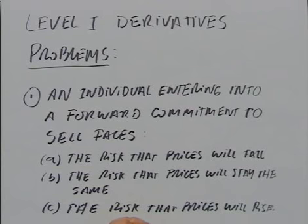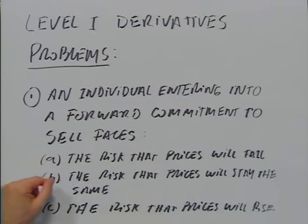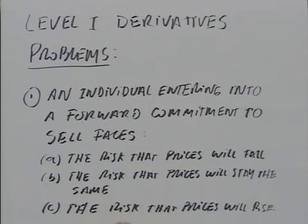You're asked: an individual entering into a forward commitment to sell faces what kind of risk? The answers are: the risk that prices will fall, the risk that prices will stay the same, or the risk that prices will rise. The correct answer is A. If you want to sell through a forward commitment, it is because you're afraid that prices will fall in the future.